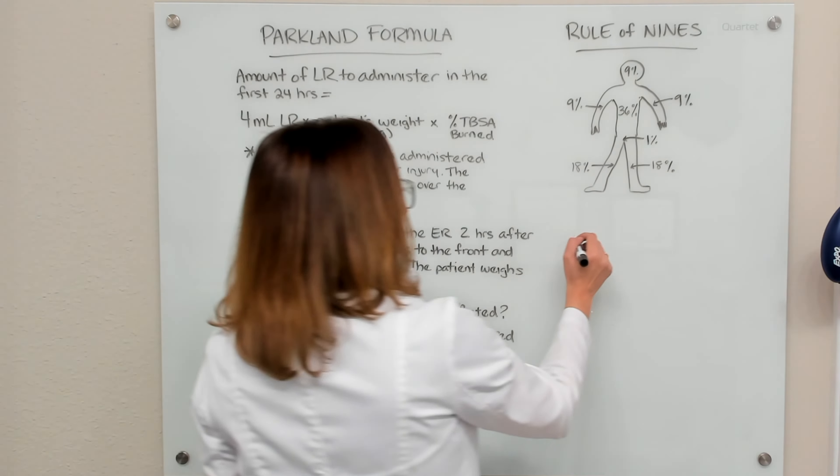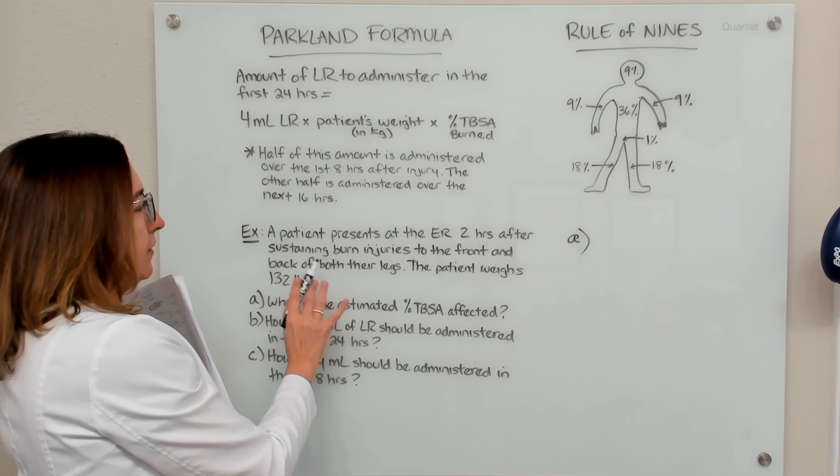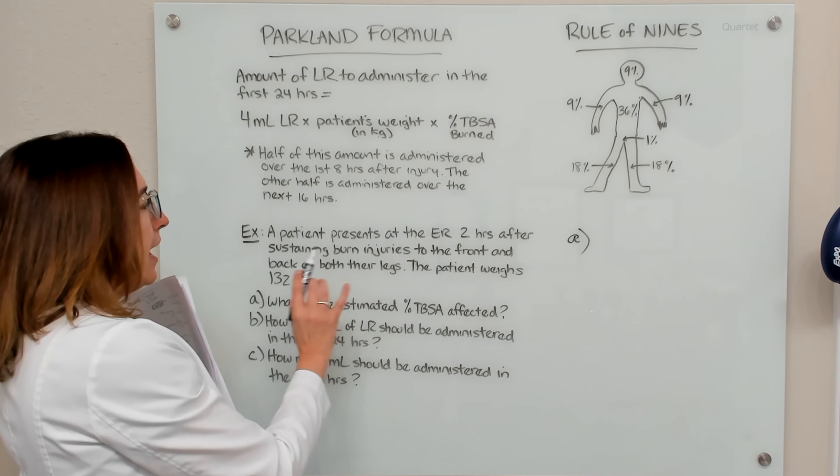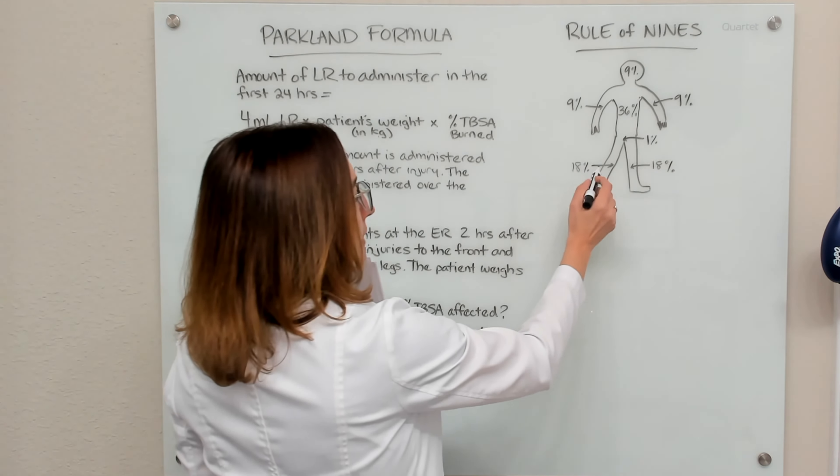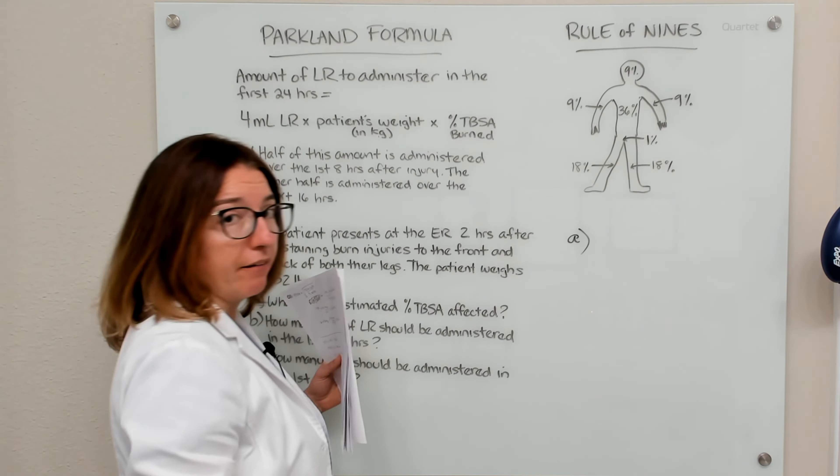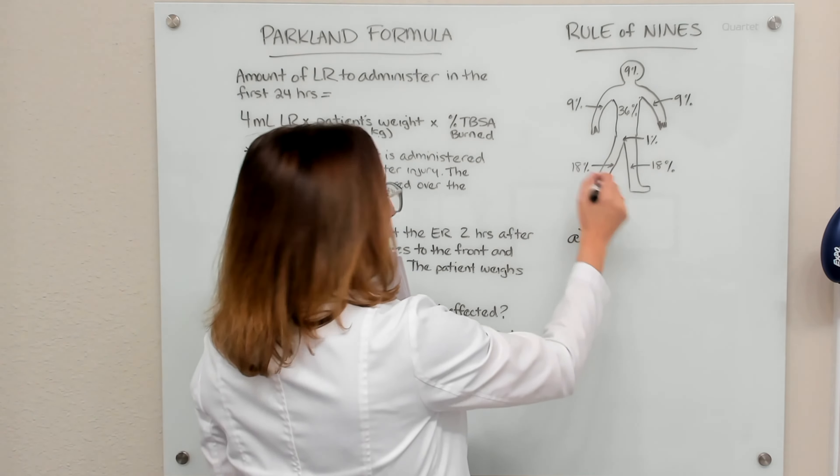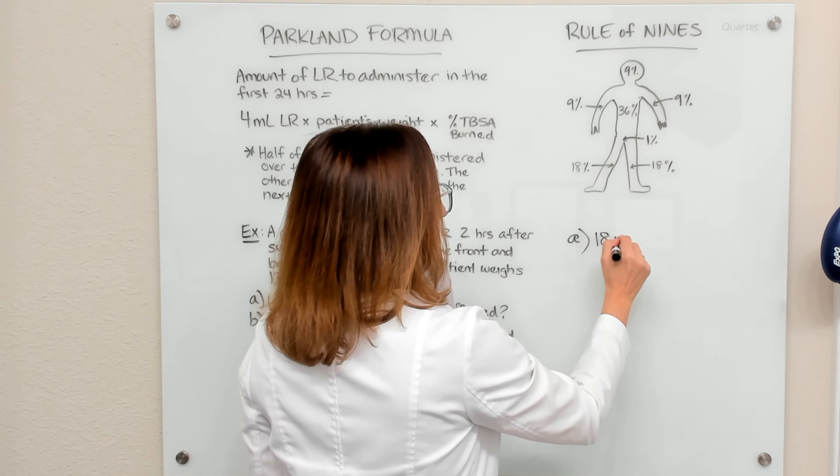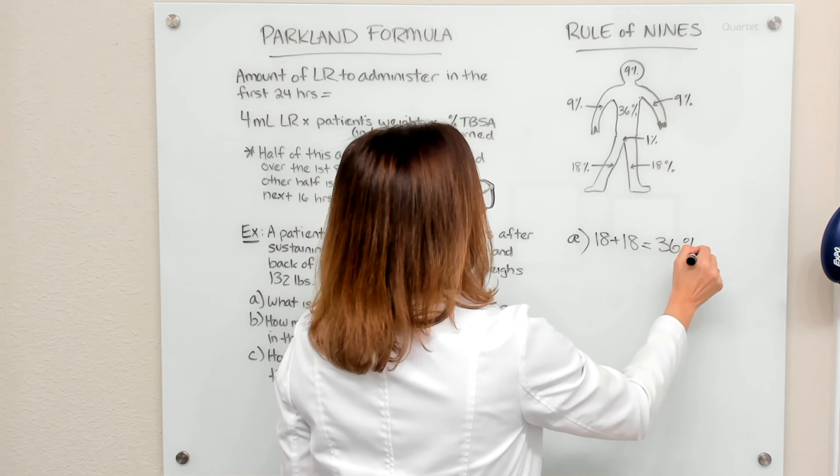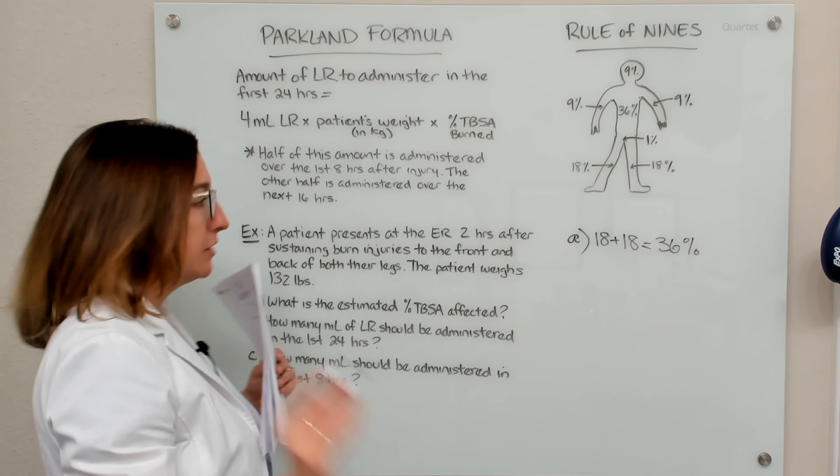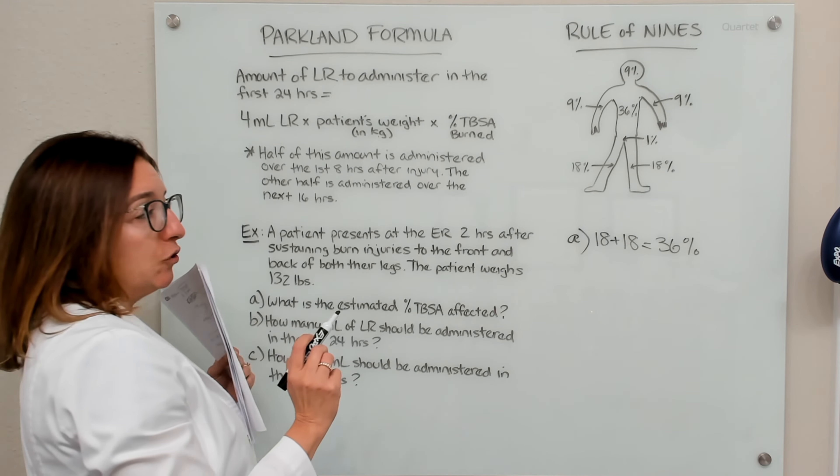So let's tackle A first. So according to our example here, they sustained burn injuries to the front and back of both of their legs. So 18% is for the entire leg. So for this patient, they burned both legs entirely. So we have 18 plus another 18. So their percent TBSA is 36%. So that is the percent TBSA and the answer to part A.